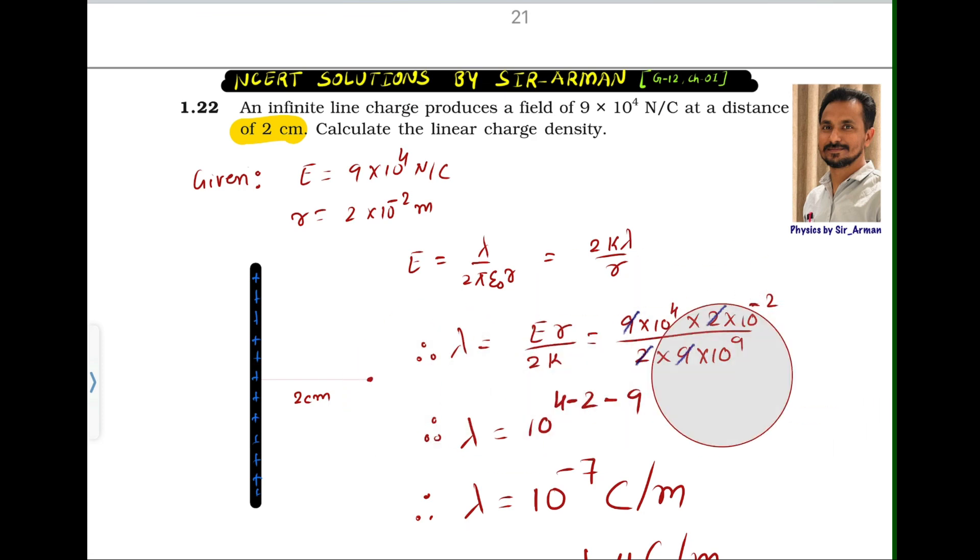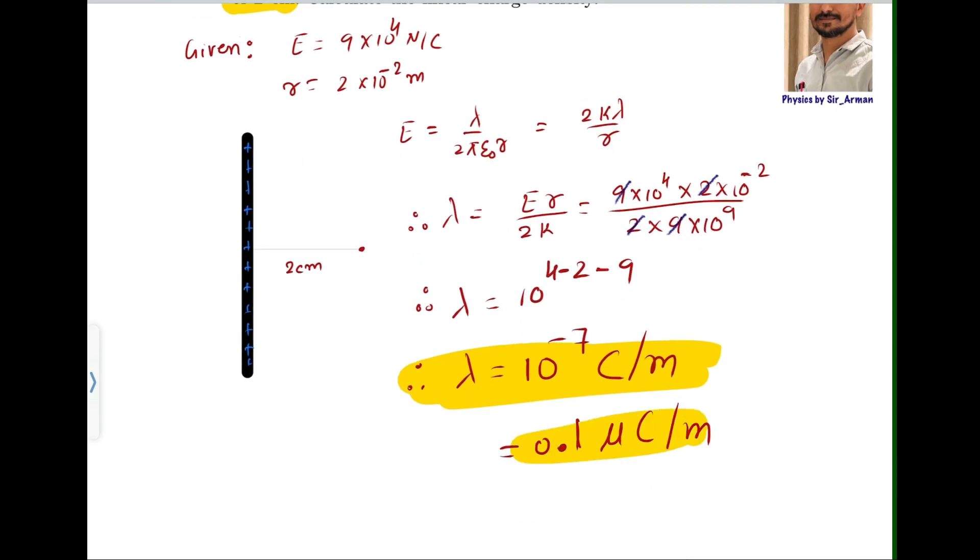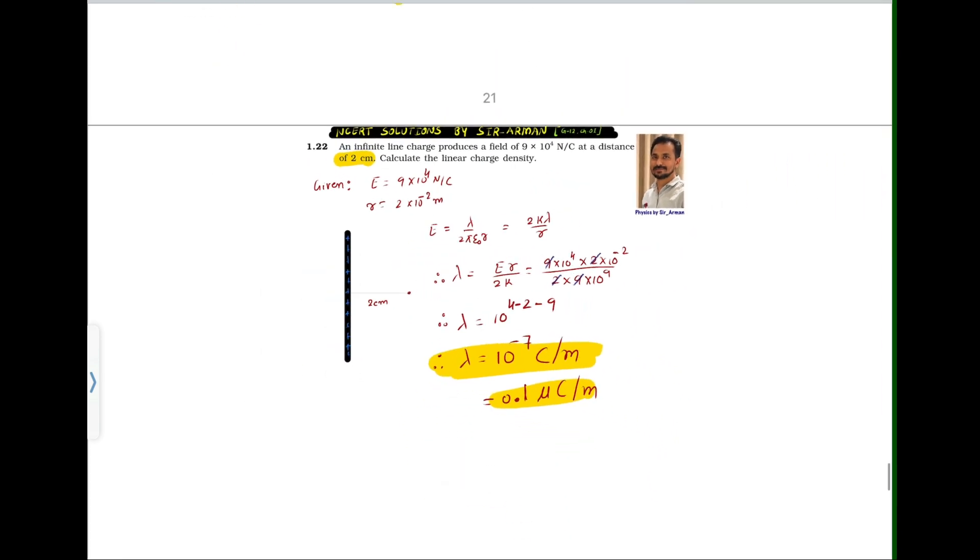Now, just by putting these values and calculating, we will get 10^-7 coulomb per meter, which is actually 0.1 micro coulomb per meter, which is the linear charge density.